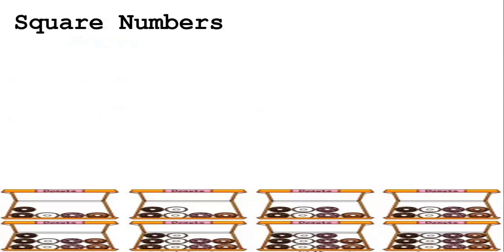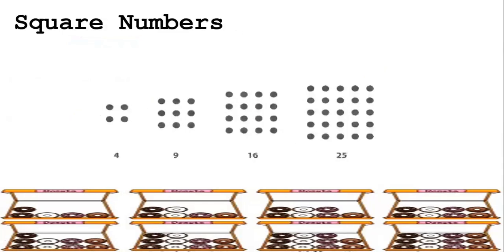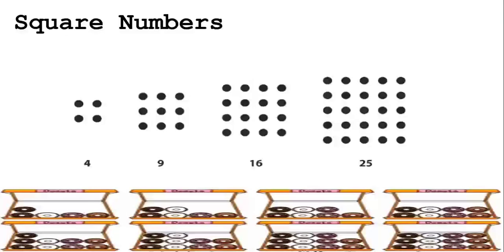Another example is the square numbers. The terms in this sequence are 4, 9, 16, and 25.